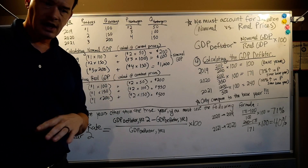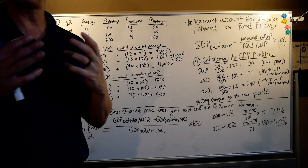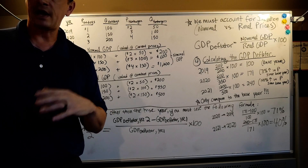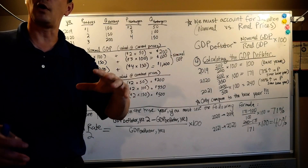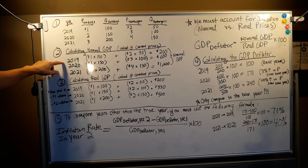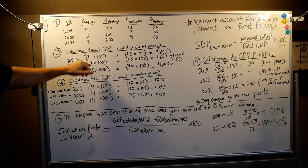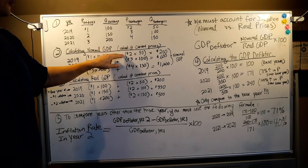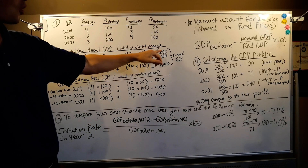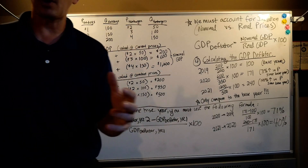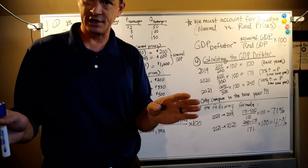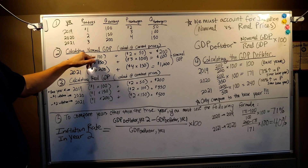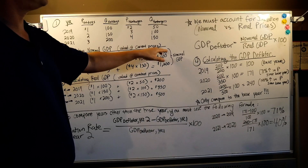The quantity of hamburgers goes from 50 to 100 to 150, so this economy is growing. Now let's calculate nominal GDP. In this example, C is the only component, and the only things being bought are hot dogs and hamburgers, so we express GDP in market value — dollar figures. In 2019, the price of hot dogs was one dollar and I sold 100, so one times 100. I sold 50 hamburgers at two dollars, so two times 50. Nominal means today's prices — we're not adjusting for inflation.